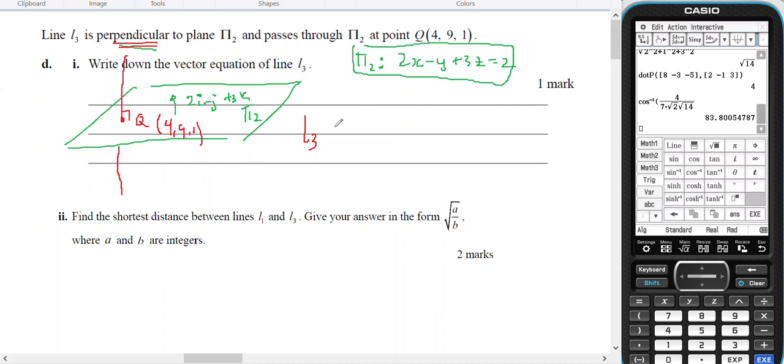because it tells me line 3 is perpendicular, and Q is 4, 9, 1. So line 3 must be the point that it goes through, which will be 4i plus 9j plus k plus some constant s times the direction of line 3, which is perpendicular to the plane, which will be 2i minus j plus 3k. And that's my expression for line 3.